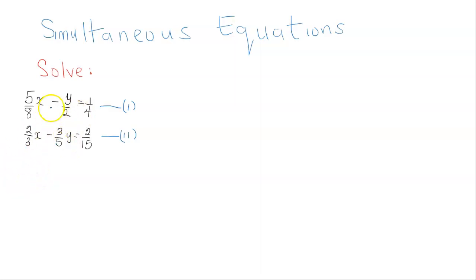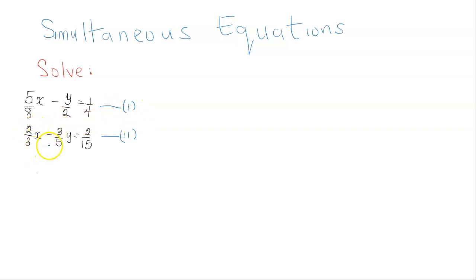Hello everyone, let's solve this pair of simultaneous equations. Equation 1 is 5x over 8 minus y over 2 equals 1 quarter, and equation 2 is 2x over 3 minus 3y over 5 equals 2 over 15.